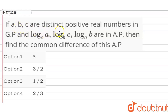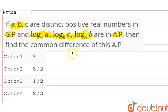If A, B, C are distinct positive real numbers in GP, and log A base C, log C base B, and log B base A are in AP, then find the common difference of this AP. We know that A, B, C are in GP and these log terms are in AP, so we have to find the common difference of this AP.